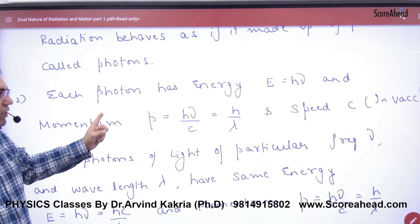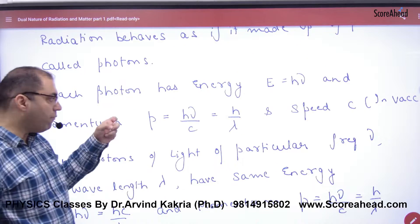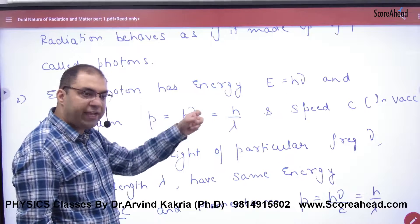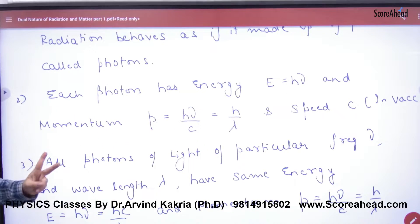Second: Each photon has energy h nu and momentum h nu by c, or h by lambda. So this is the momentum, this is the second point.